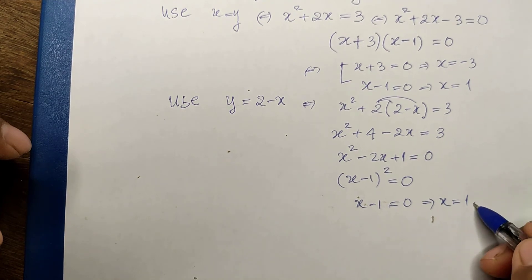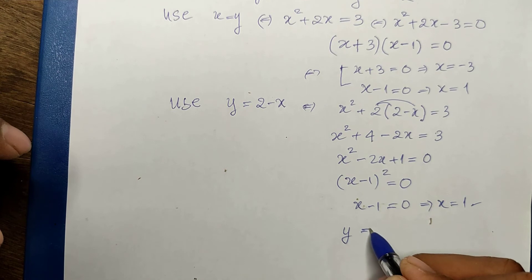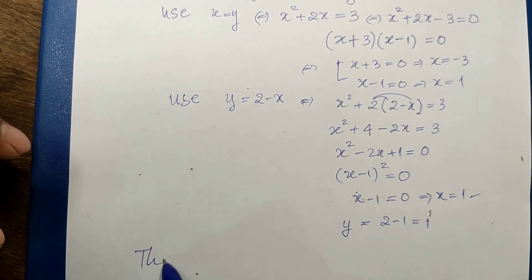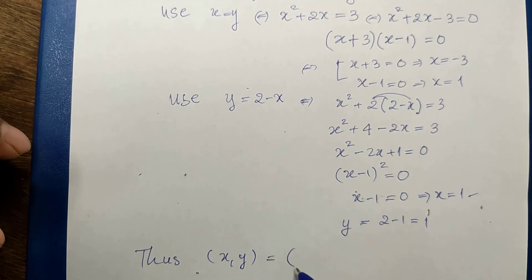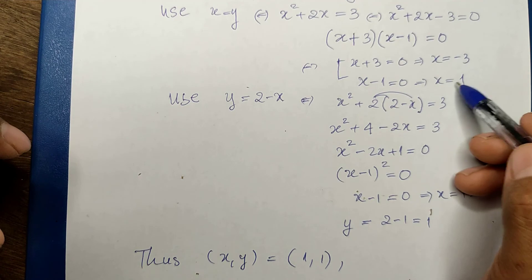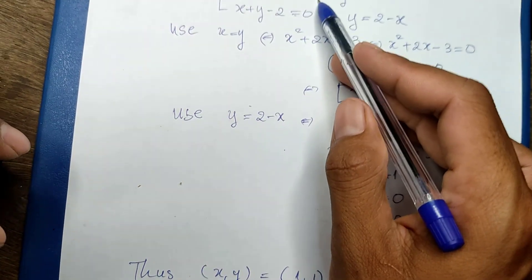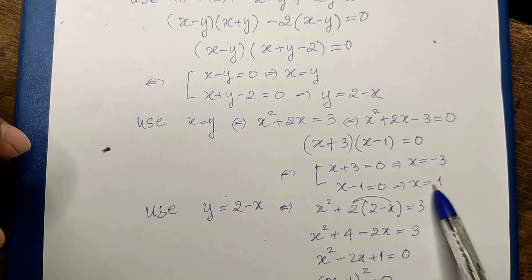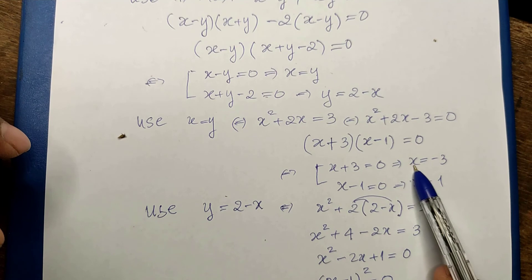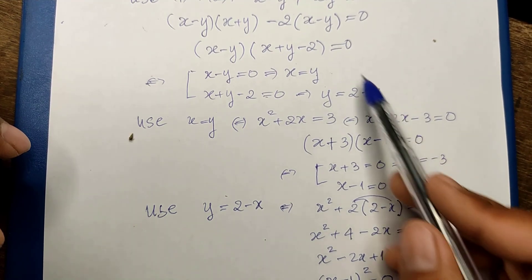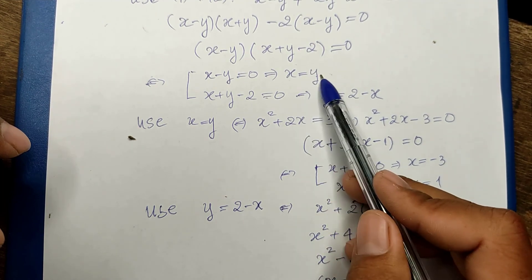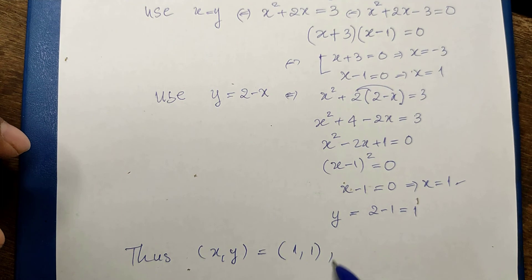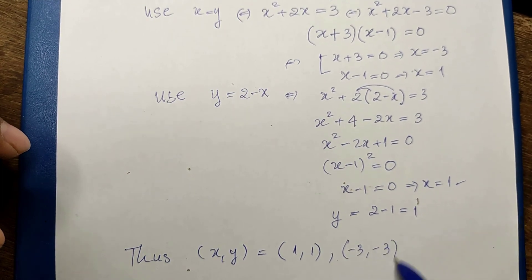Now we can find all values of x and y. From the first case where x equals y: when x equals 1, y equals 1, giving the solution (1, 1); when x equals minus 3, y also equals minus 3, giving the solution (minus 3, minus 3). These are our solutions.